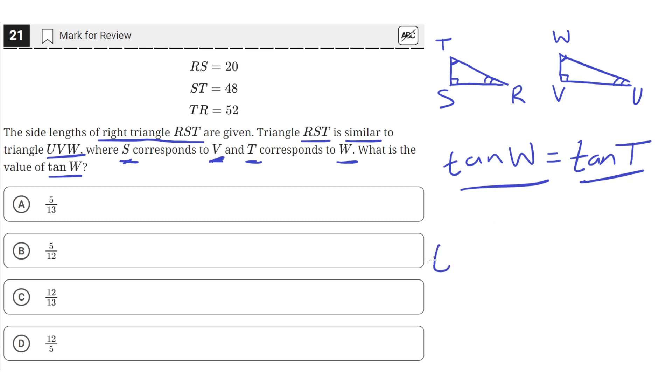So the tangent of T is equal to opposite over adjacent. So tangent of T equals the length SR over the length of ST. So SR, or RS as they called it here, is equal to 20, and ST is equal to 48.